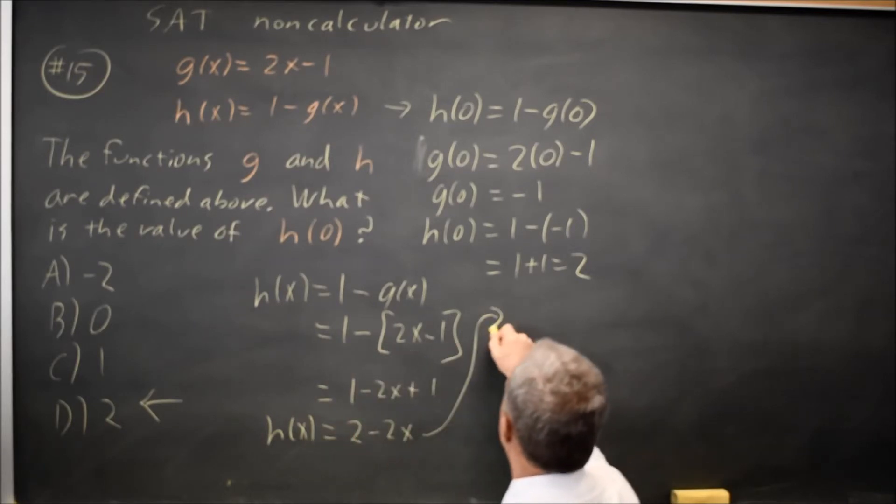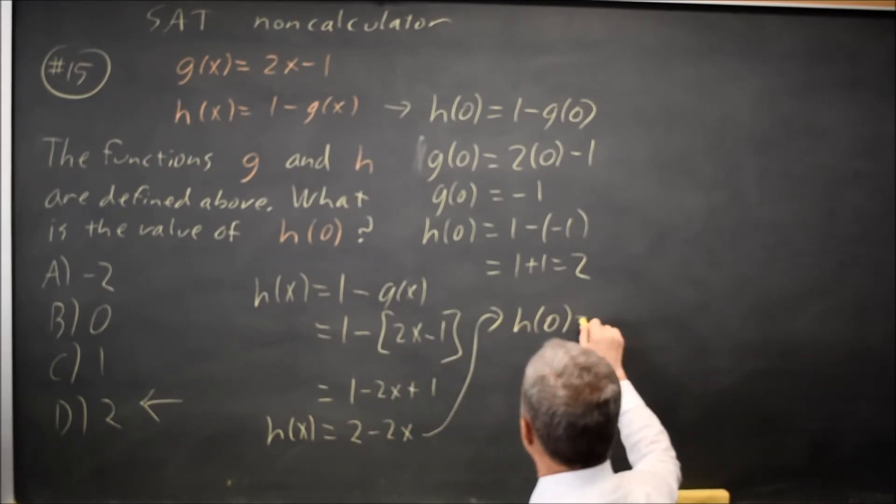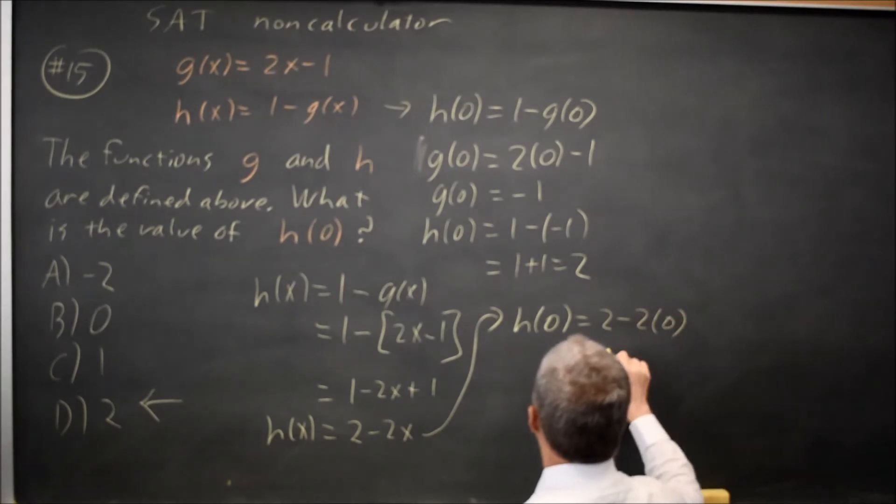And at that point, I can find h of 0, which you're asking for, is 2 minus twice 0 is 2.